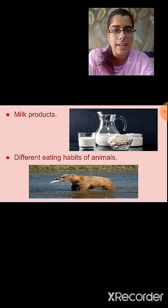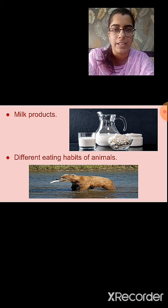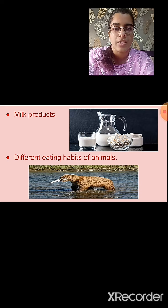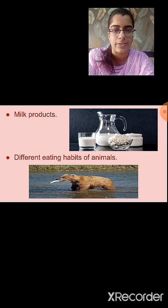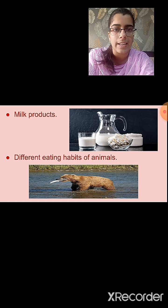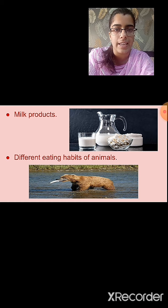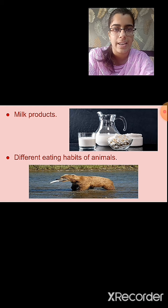What are the different products that can be made from milk? We get milk from milk animals such as cow, goats, camel, yak, etc. The different products that can be made from milk are butter, ghee, cheese, curd, ice cream, etc.